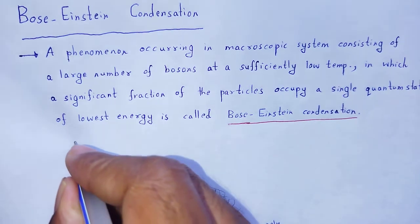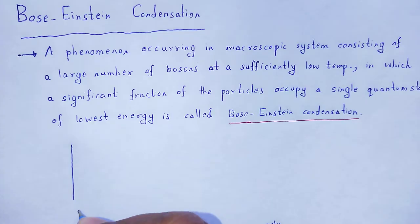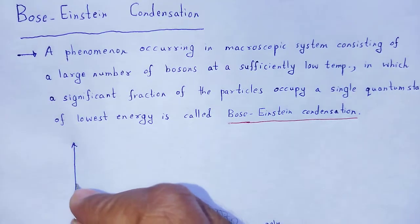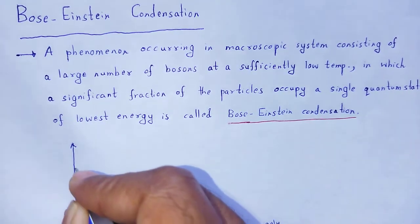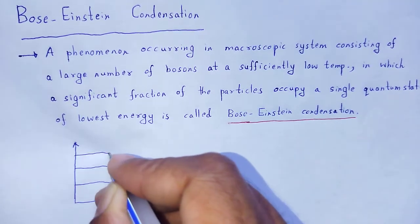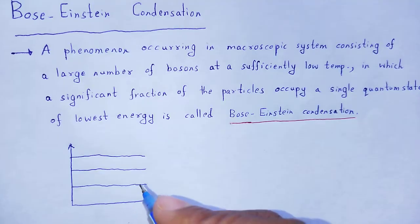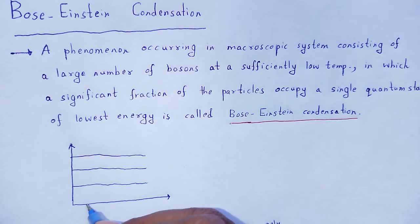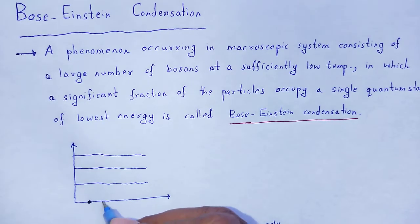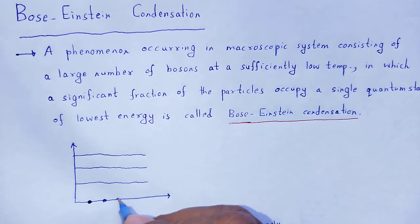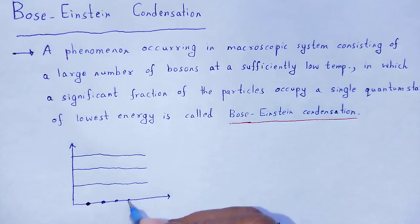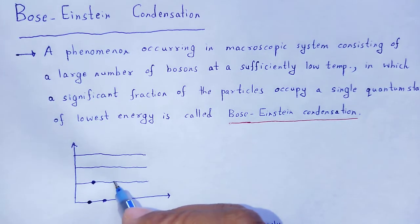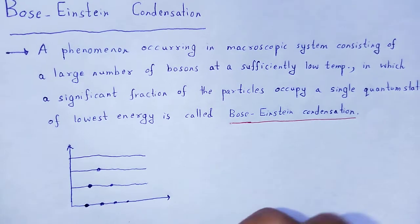If we take the energy level diagram of such a system of bosons, with the ground state energy, if there are three or four bosons in the ground state, and in the further excited states there are a number of bosons — let's say 2, 1, like this.